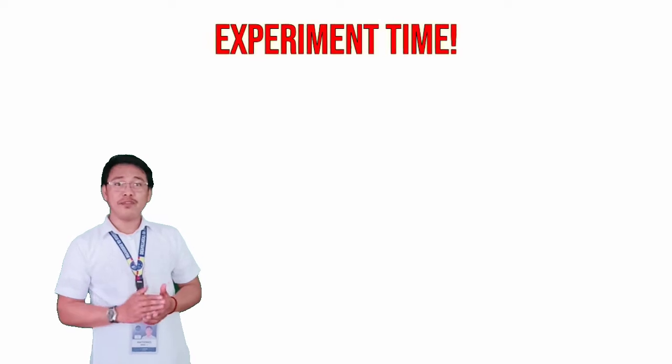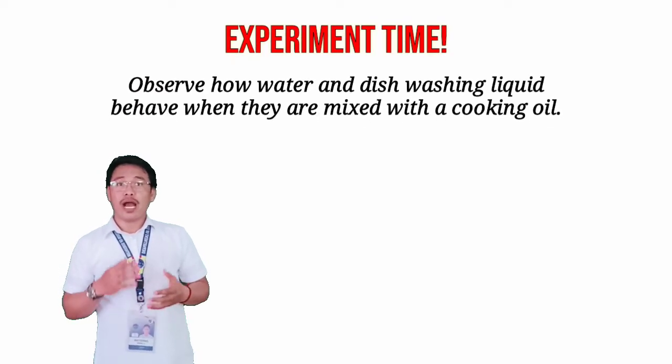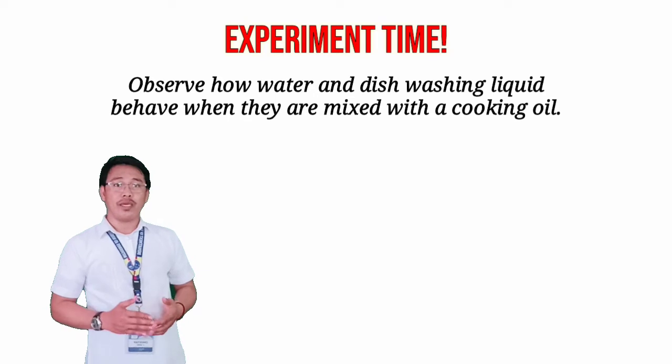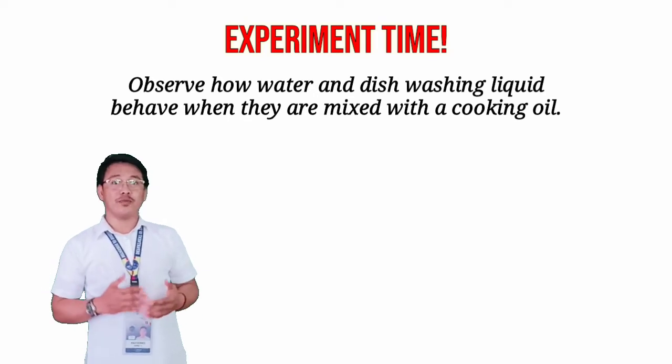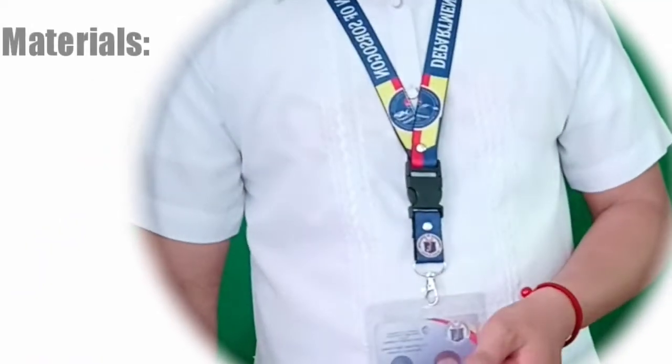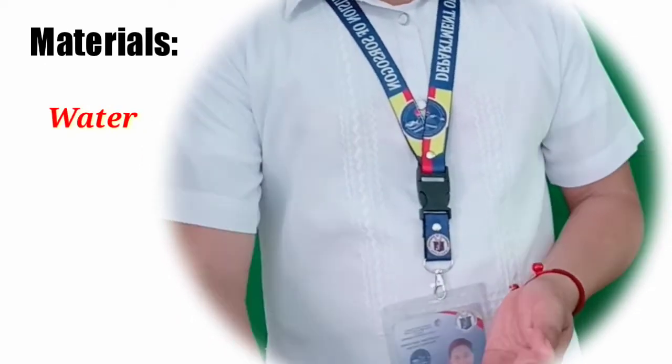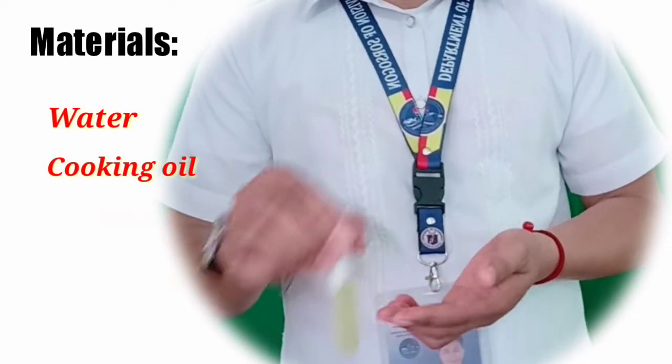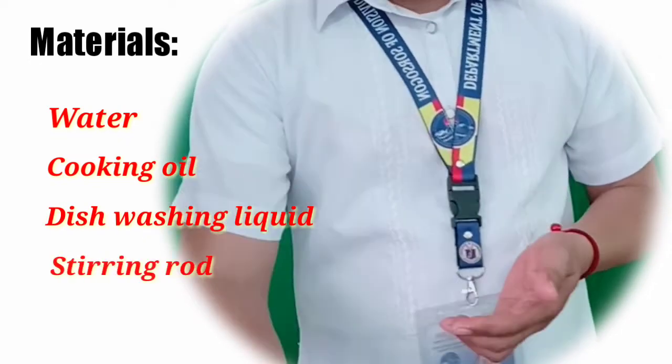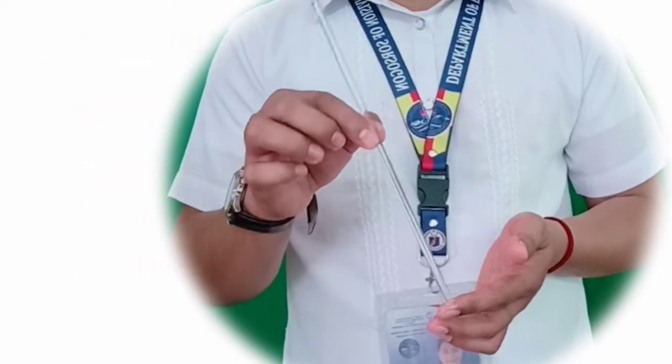For today's lesson, let's do a simple experiment first. We will observe how water and dishwashing liquid behave when they are mixed with cooking oil. To do this, we will be needing water, cooking oil, dishwashing liquid, and a stirring rod. Let's do it!